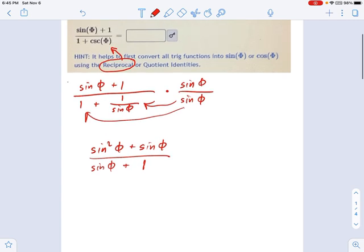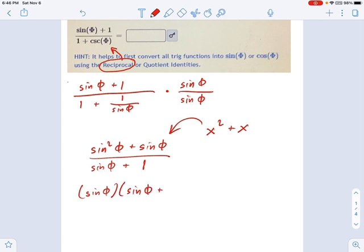Now, in terms of getting this as a single fraction, I need to keep doing some work. And as I'm looking at it, I see there's something I can factor out on the top. I think I can factor out a sine of phi on the top, just like we would GCFs in simpler problems. As I look at that problem, what I see is x squared plus x. So I factored out an x or a sine phi, and what's left behind is sine phi plus 1.